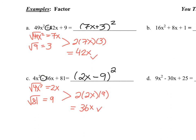Make sure that for any factoring question, you check for common factors first. In this case there aren't any, but as a rule of thumb always check for a common factor. Now pause the video and try b and d on your own, then check with me after.